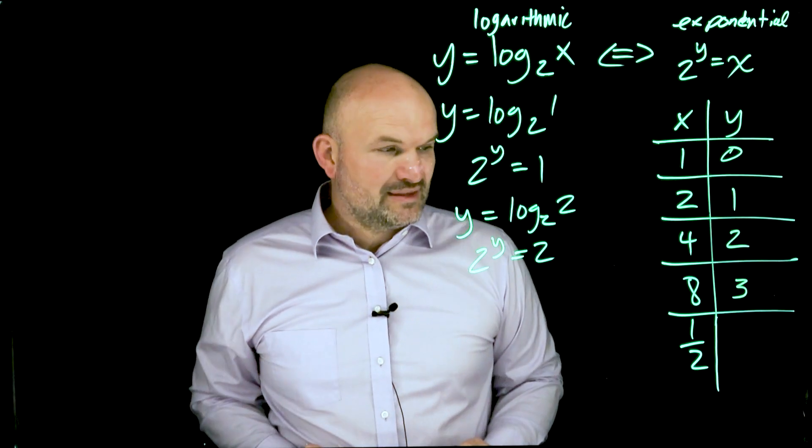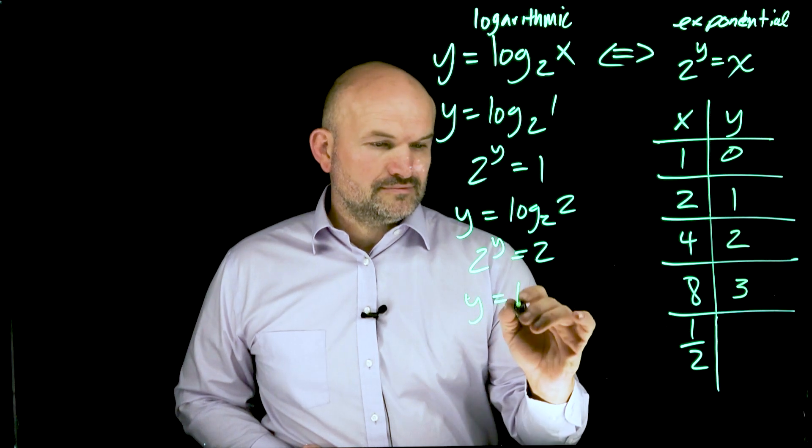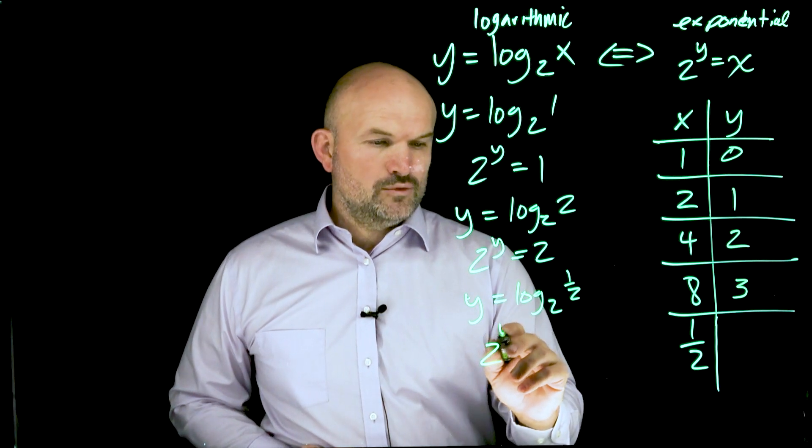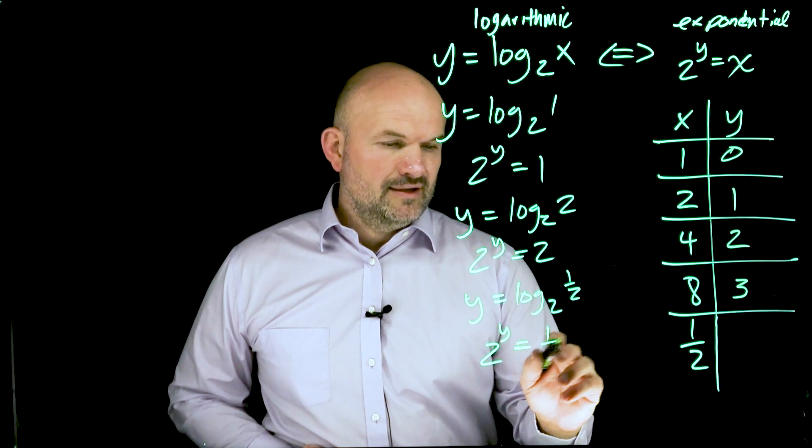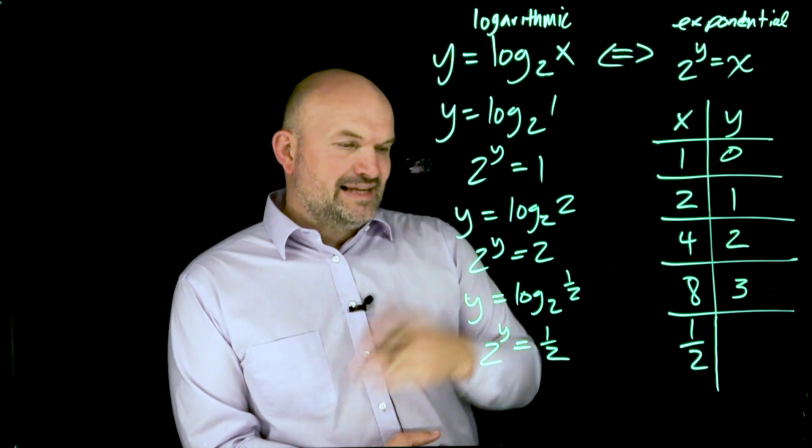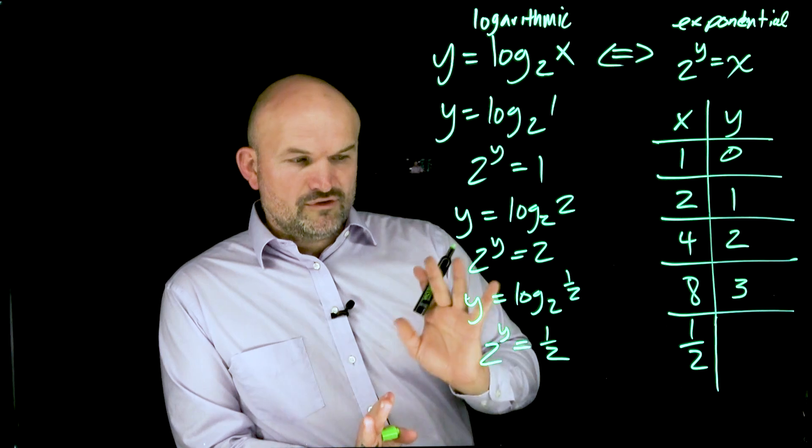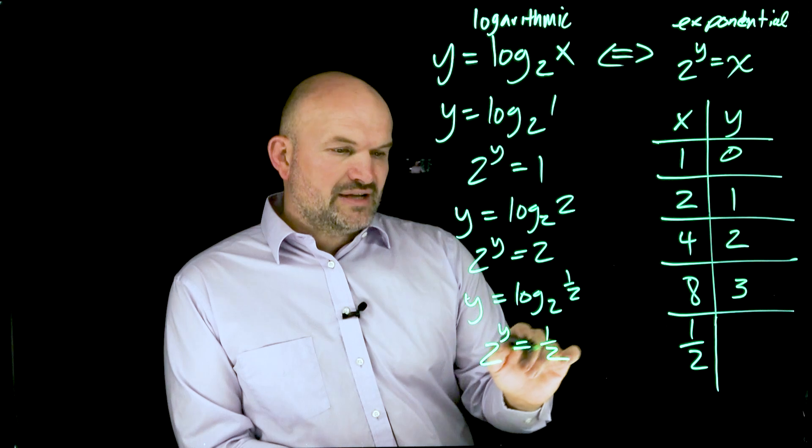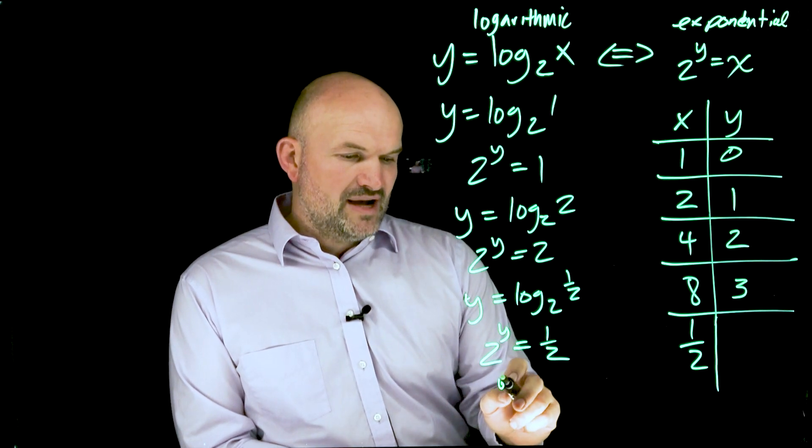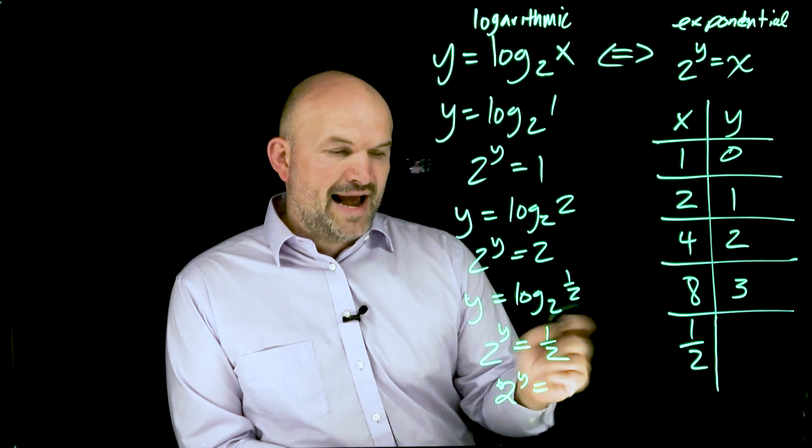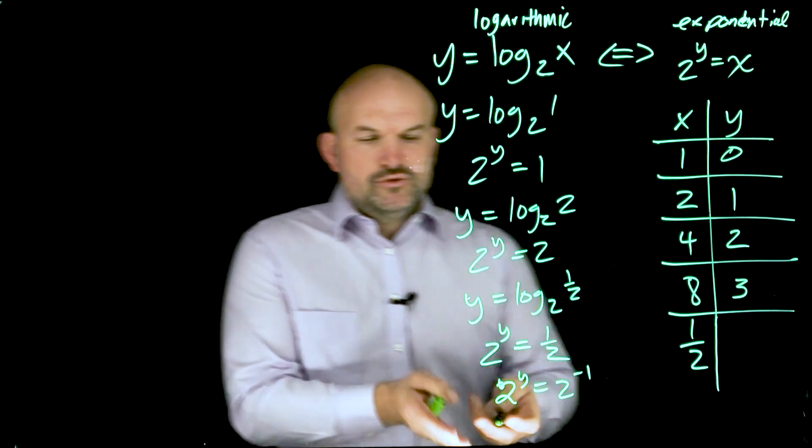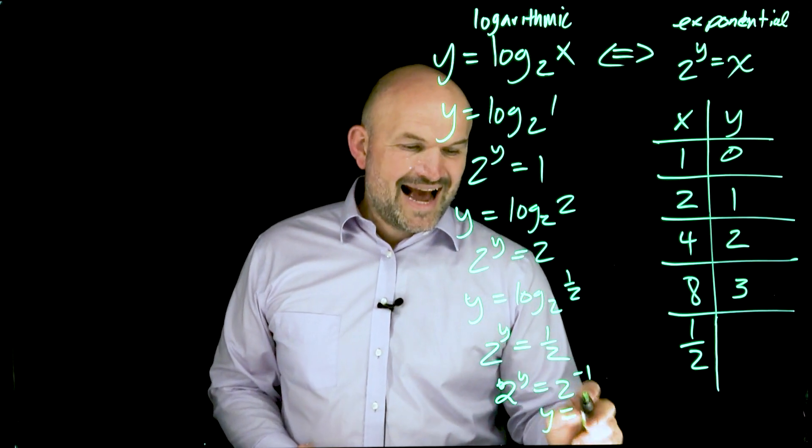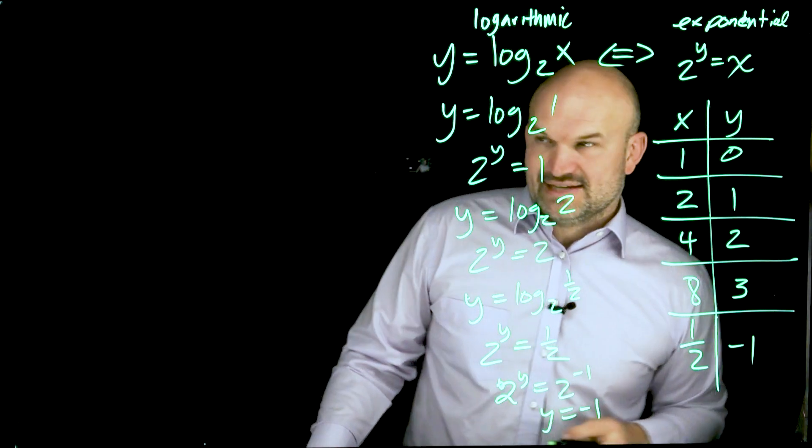This one is a lot of times one that gets a little tricky with students. If I have y equals log base 2 of 1 half, well if we rewrite it in our form, 2 raised to what value y is going to equal 1 half? I can always rewrite 1 half as 2 to the negative first power. And if I have 2 raised to some number equals 2 raised to the negative second power, hopefully you can agree with me that y has to equal negative 1. So in this value, y is equal to negative 1.